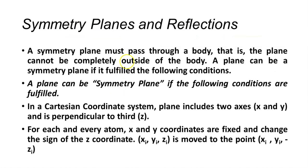The symmetric plane has to be defined now. A symmetric plane is a plane which passes through the body and reflects one side onto the other, leaving the whole molecule unaffected. We will now denote points using Cartesian coordinates x, y, and z.